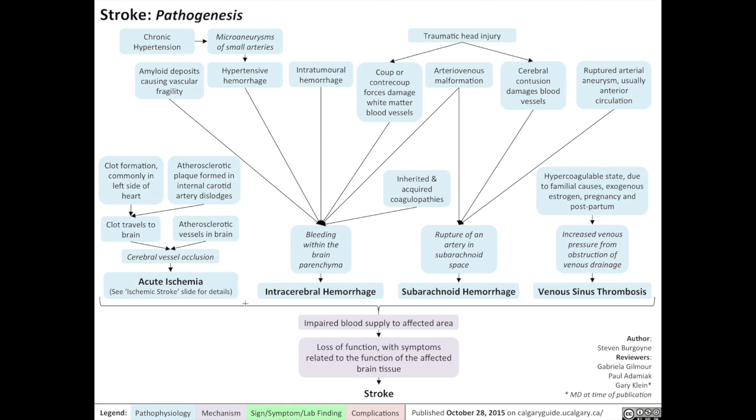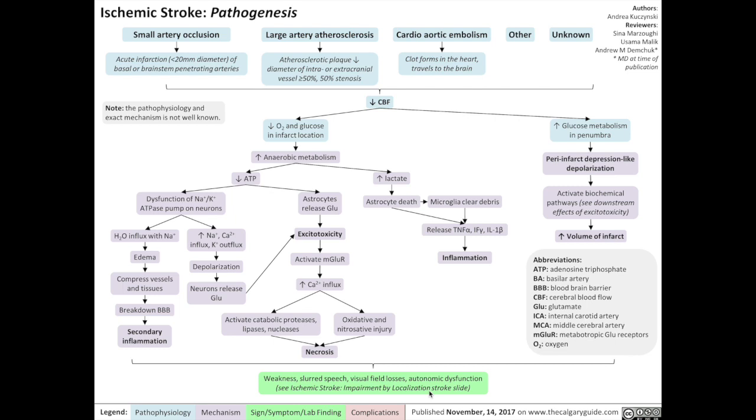All four of these types of stroke impair blood supply to the affected area of the brain, resulting in the loss of function and associated symptoms that are characteristic of each type of stroke. And that's it for the pathogenesis of stroke as a general topic. Next we move on to discussing the pathogenesis of acute ischemic stroke in more detail. This is the Calgary Guide slide on the pathogenesis of ischemic stroke, one of the four main causes of stroke.